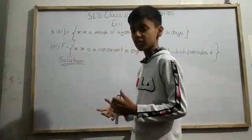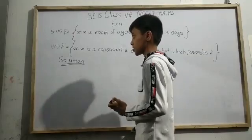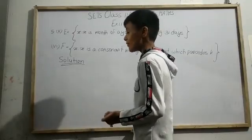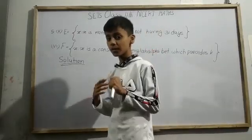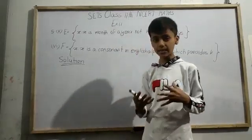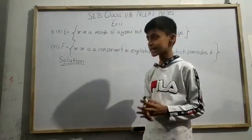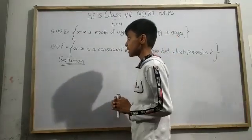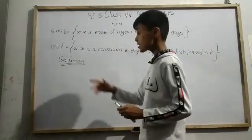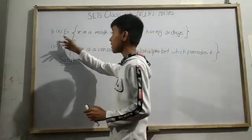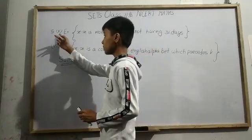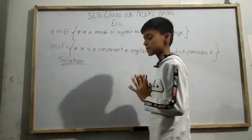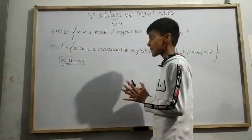These are the last questions of this exercise. As we know, question number 5 was: list all the elements of the following sets. So here also the same thing we have to do. In question number 5, a set E has been given to us.